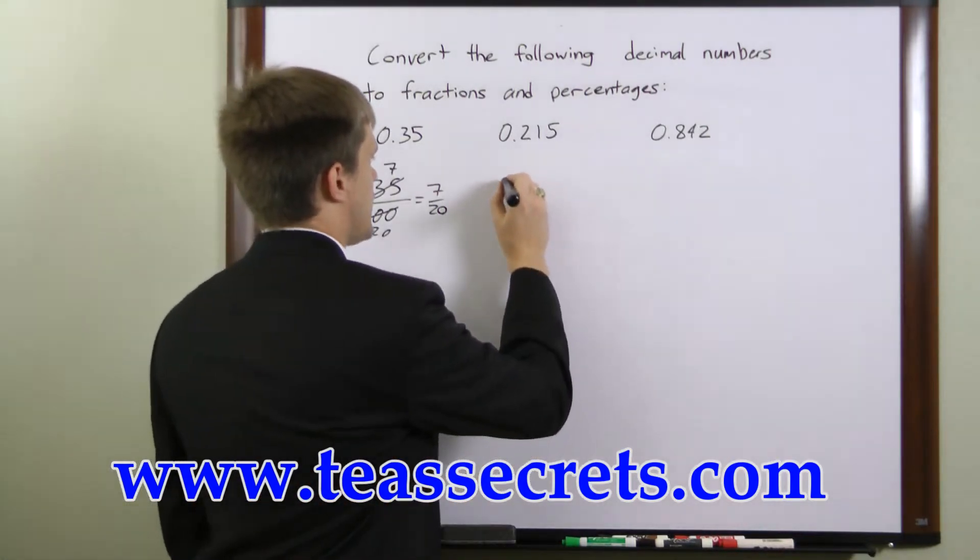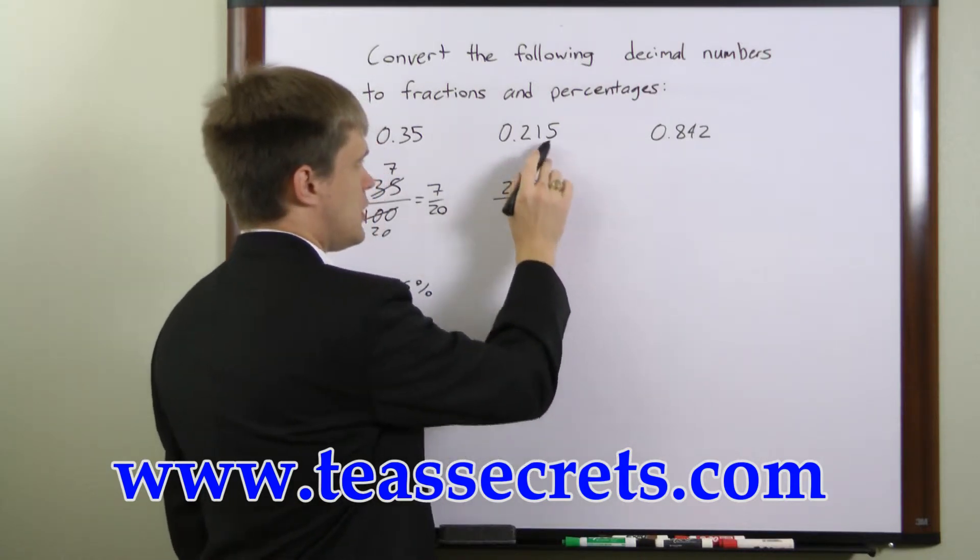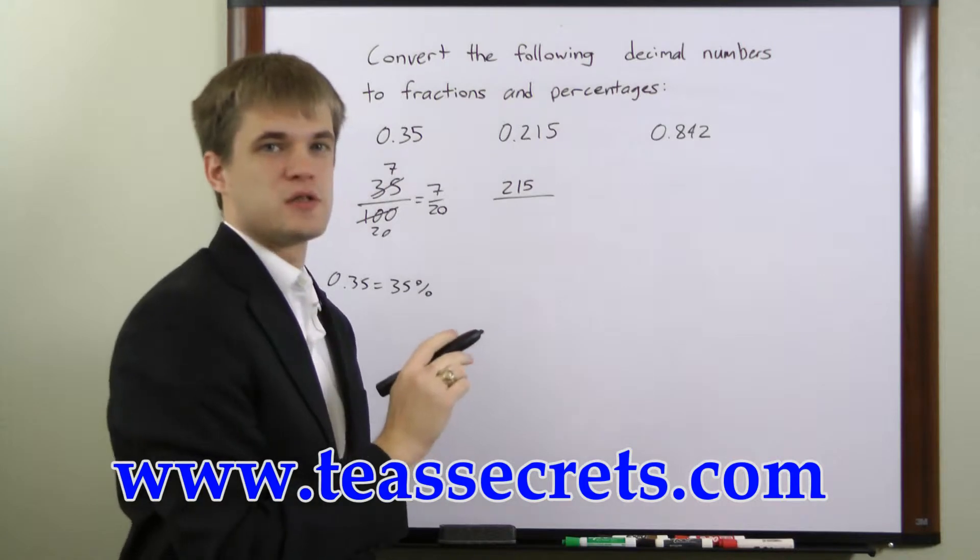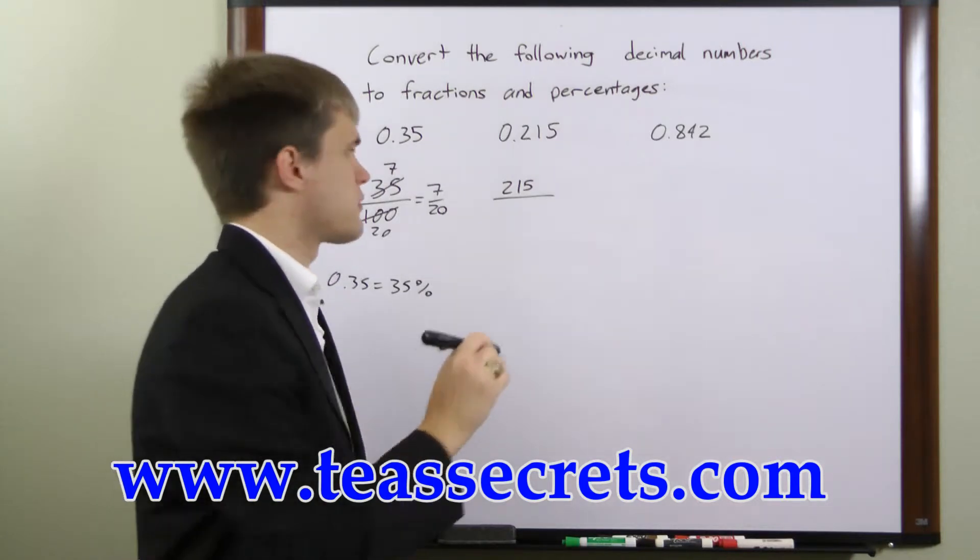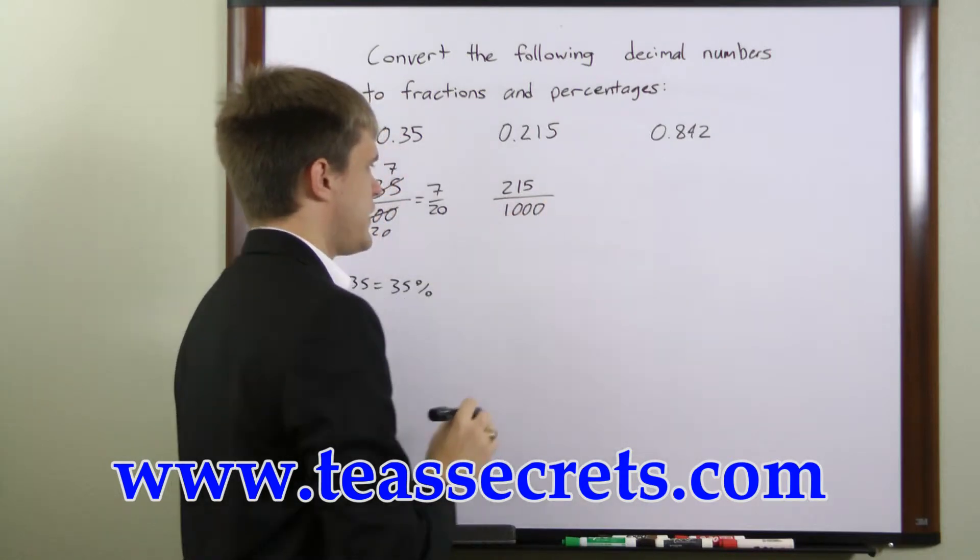Once again we'll write 215 as our numerator. The rightmost digit is 3 places to the right of the decimal, so we will write three zeros in our denominator. 215 over 1,000.